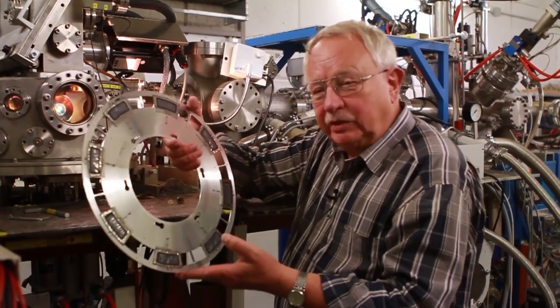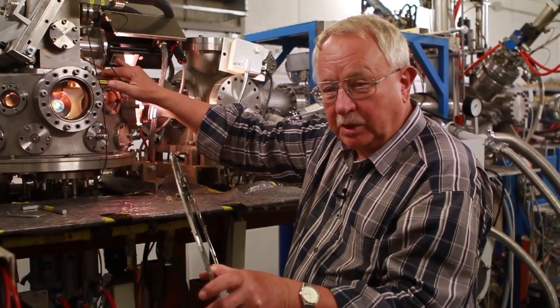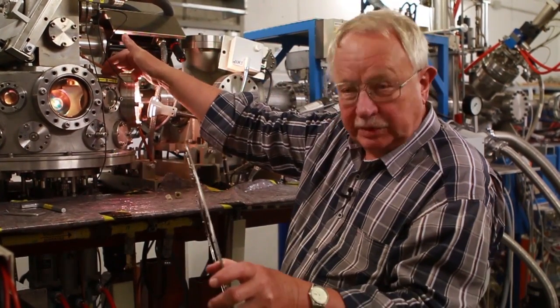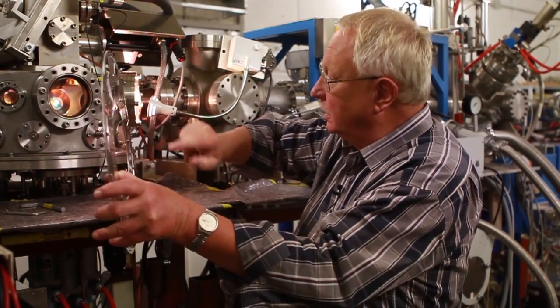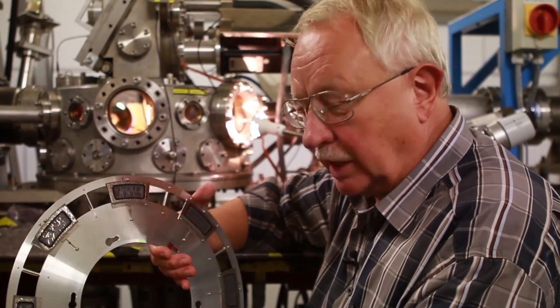Here we have our target wheel and this wheel is mounted inside this vacuum chamber. The beam is coming from the right side and it hits the wheel in this place. We have very high beam intensities and a fixed target would immediately melt in the beam, and therefore we use this rotating wheel.